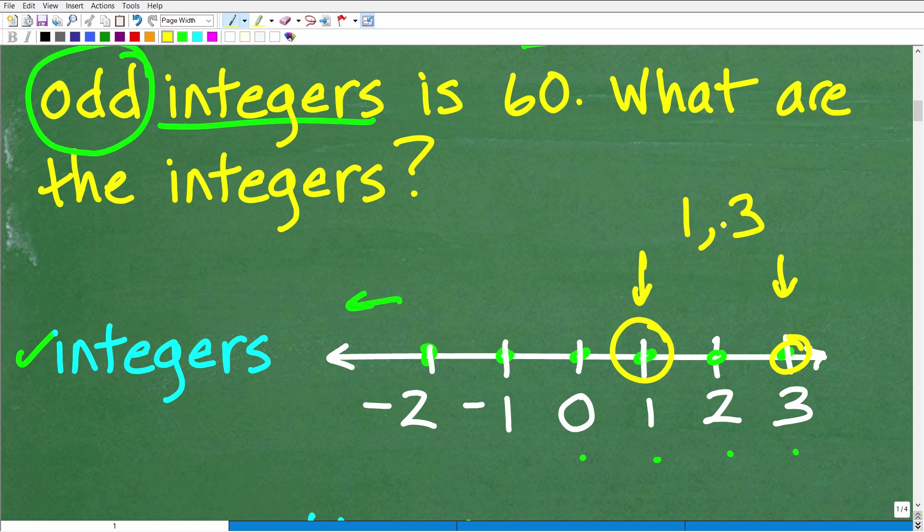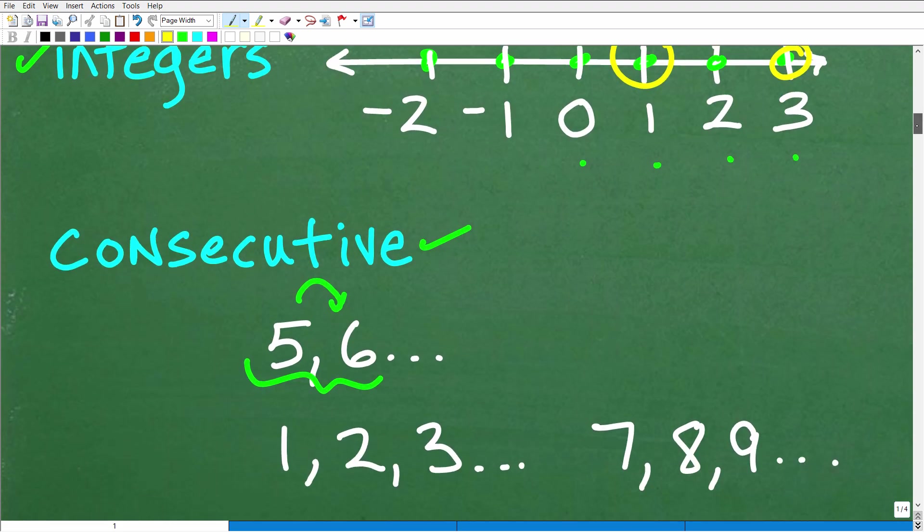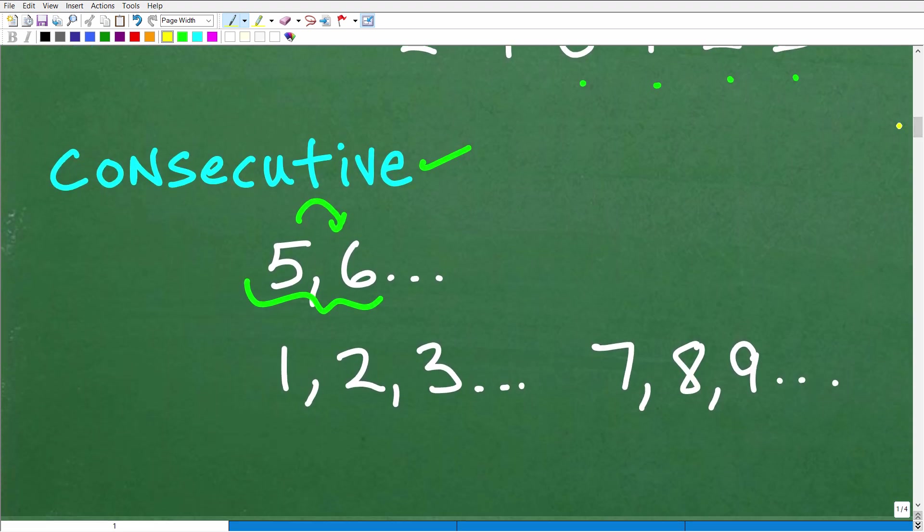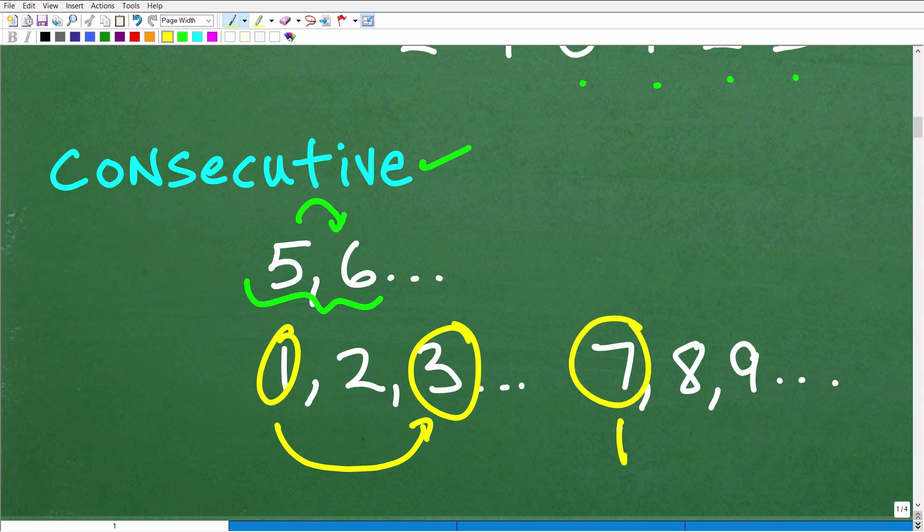So you've got to really make sure you understand that. So over here, you can see that if I have one, that's an odd integer. And so the next consecutive odd integer would be three. And you can see this pattern here. So seven's an integer, it's odd. So the next number is eight, it's even. So the next number after that is odd. So seven and nine would be consecutive odd integers.